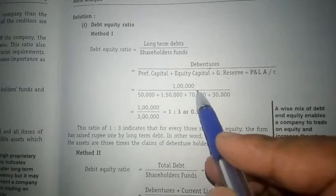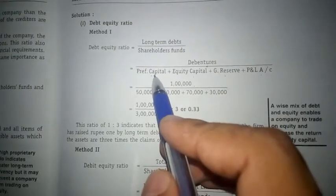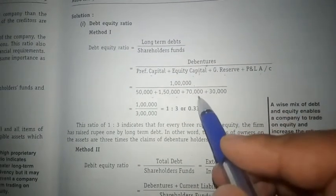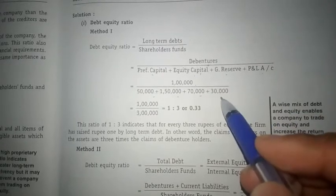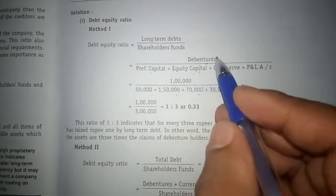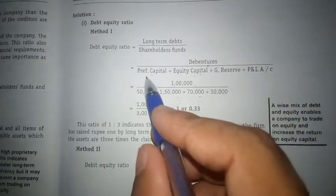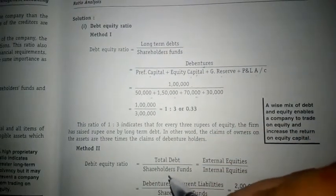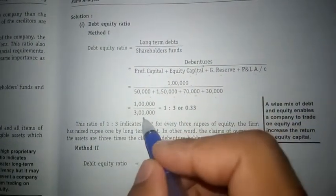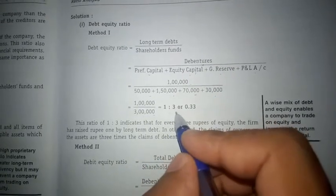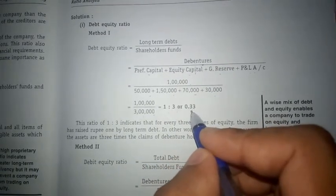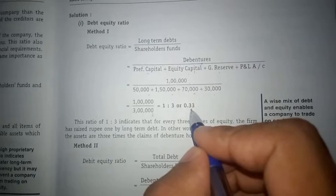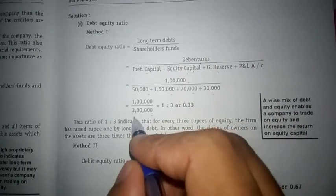Debenture as per this problem is rupees 1 lakh, preferential capital is 50,000, equity share capital is 1 lakh 50,000, general reserve is 70,000, and profit and loss account is 30,000. Dividing long term debt by shareholders fund: 1 lakh divided by 3 lakh gives 0.33, or expressed as a ratio, 1 is to 3. This is the debt equity ratio.